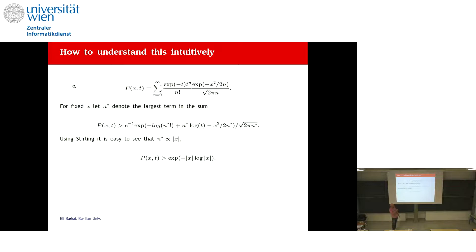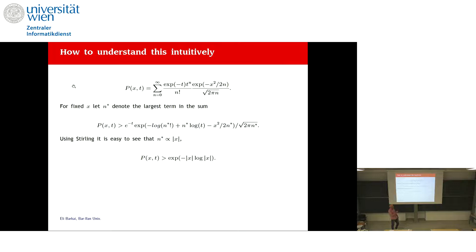To understand exponential tails intuitively, start with a simple model: exponential waiting time PDF and Gaussian jump lengths. We have a Poisson distribution for the number of jumps n at time t, and a Gaussian for the conditional probability given n jumps. For large x, we identify n-star, the dominant term in the sum. Using Stirling's approximation, n-star is proportional to x. Substituting, x squared over n-star gives x, yielding exponential decay in x up to logarithmic corrections.